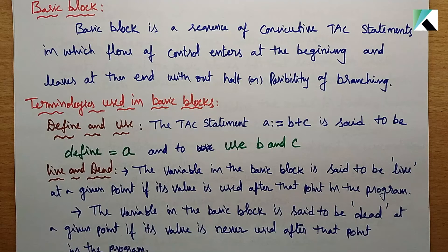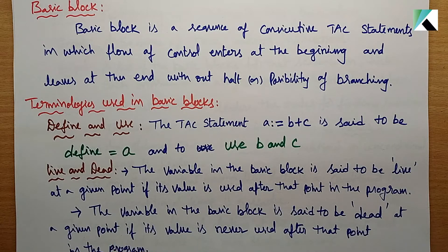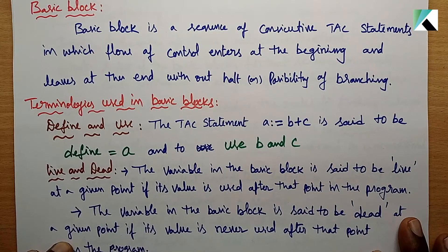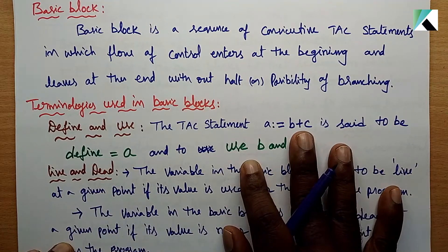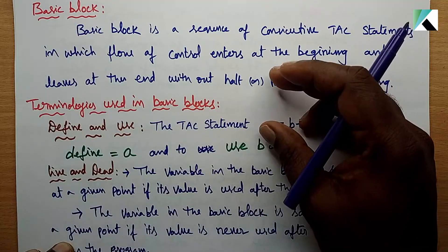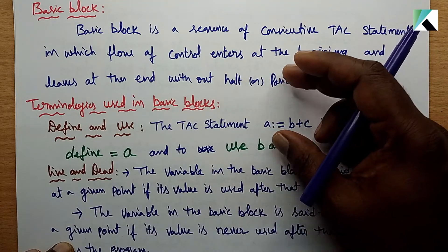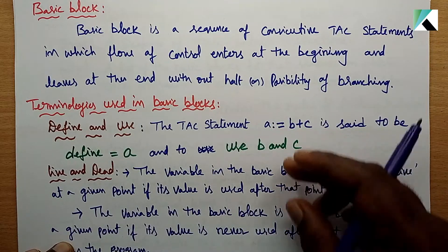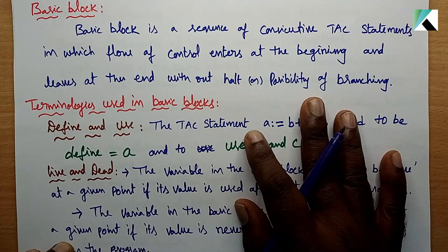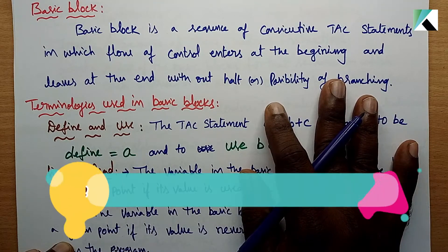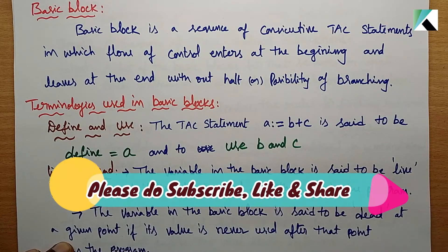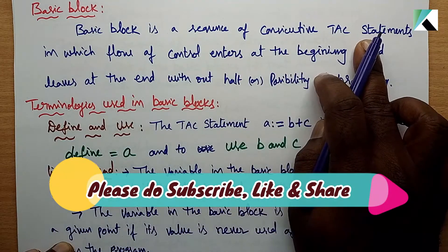A Flow Graph can be made up of Basic Blocks. Each node in the flow graph is a basic block, and one basic block is connected to another. The edges represent the control flow between blocks. A Basic Block is a sequence of TAC (Three-Address Code) statements.